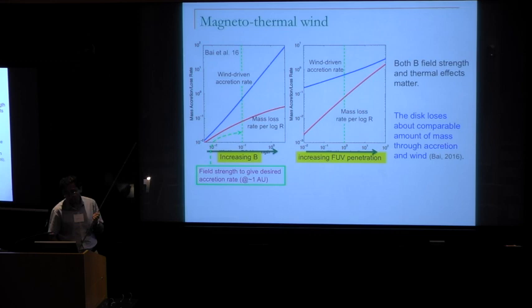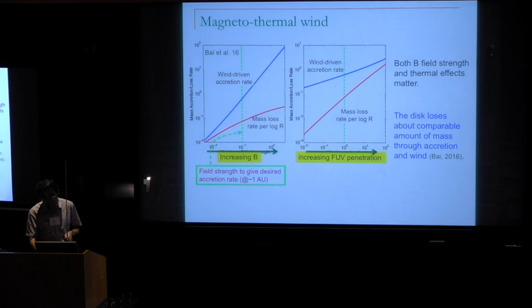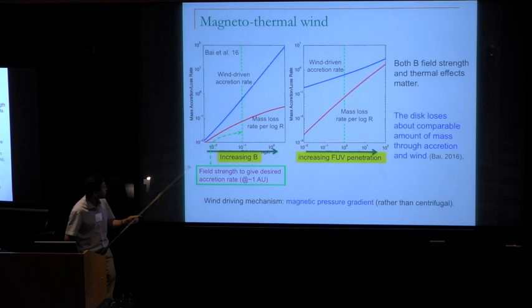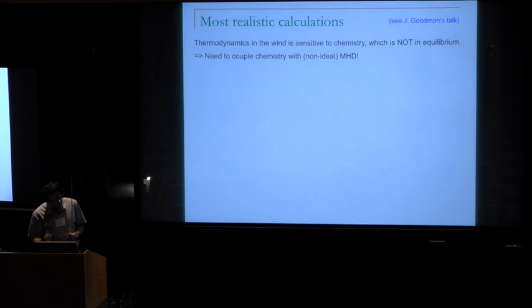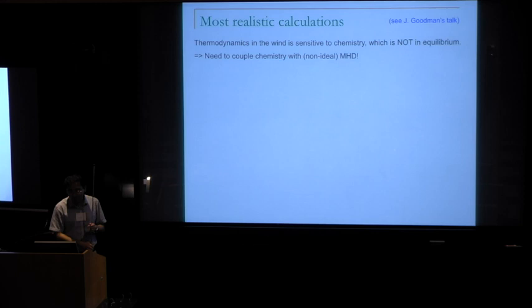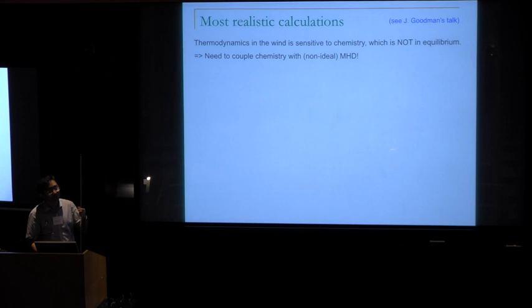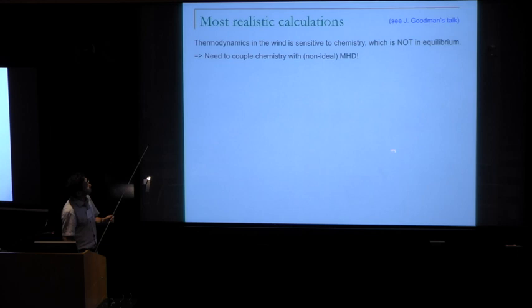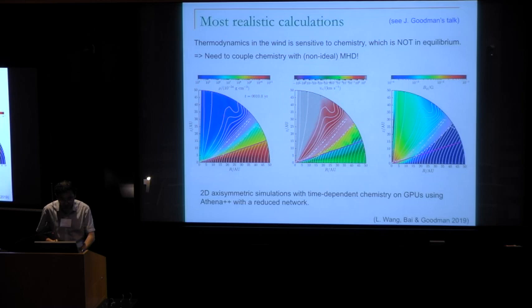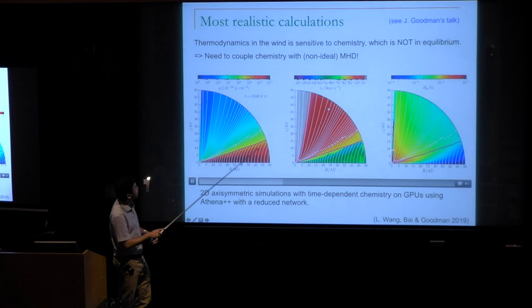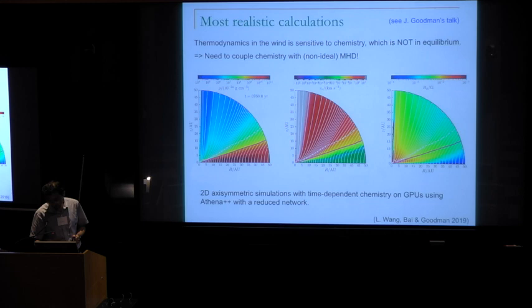We find the wind mass loss rate is fairly significant — comparable to the wind-driven accretion rate. Because the wind depends sensitively on thermodynamics, you really need to get the thermodynamics right to get realistic wind properties. This requires getting the cooling right, which requires the right coolant, hence the right chemistry. This is work led by Lile Wang, who implemented time-dependent chemistry coupled with MHD. The result shows self-consistent wind launching with the right accretion rate of about 10⁻⁸ solar masses per year, and significant wind mass loss rate comparable to the accretion rate. Lile also found EUV can be important, and wind heating is dominated by ambipolar diffusion through ion-neutral friction.